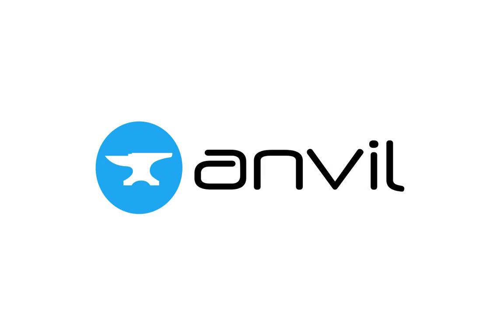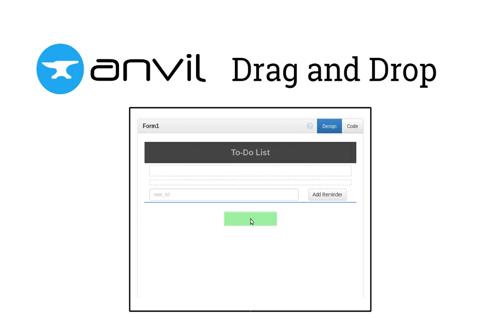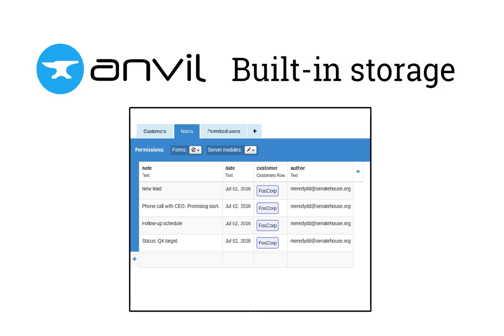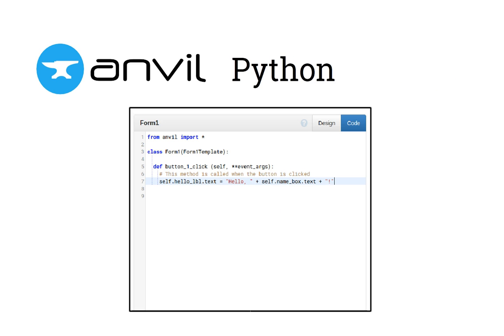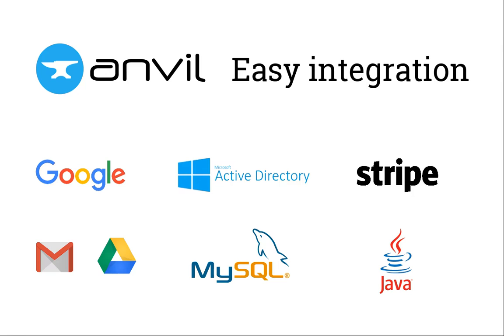Anvil is a simpler way to build web apps. It features drag-and-drop design, built-in storage, simple programming in Python, and easy integration with external services.